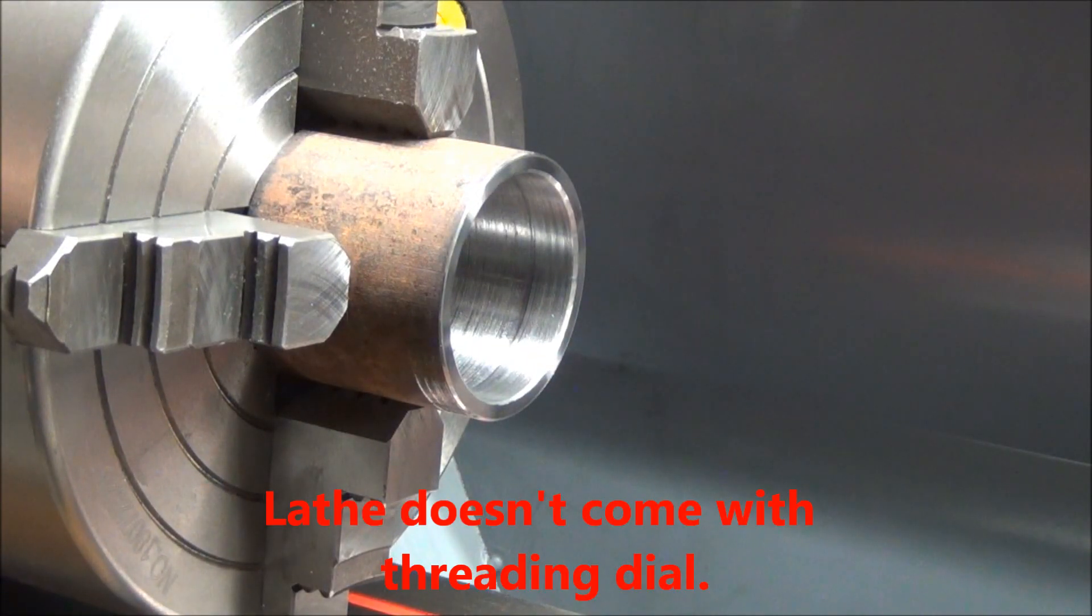With this lathe having a two millimeter lead screw, supposedly I can engage the half nut anywhere I want to cut this one millimeter thread. Let's see.